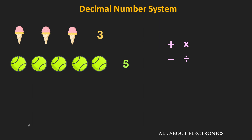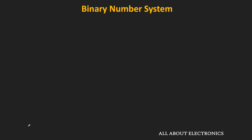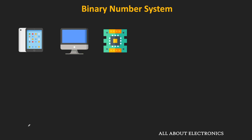This decimal number system consists of 10 different digits starting from 0 to 9. On the other end, all the digital circuits and systems work on the binary number system. So in the binary number system, there are two digits, that is 0 and 1. If we see any binary number, then it consists of only ones and zeros.